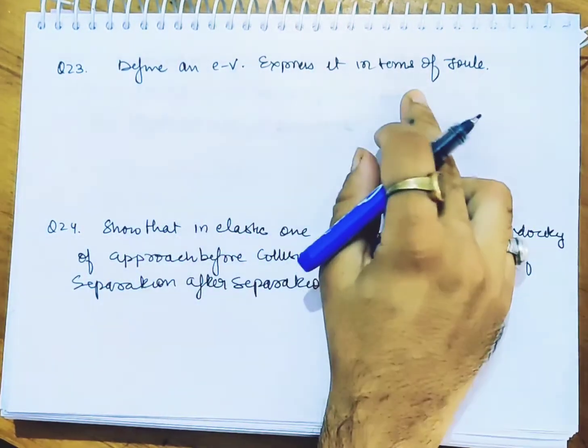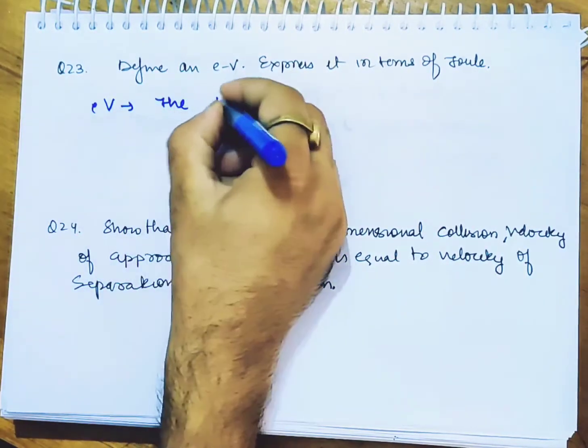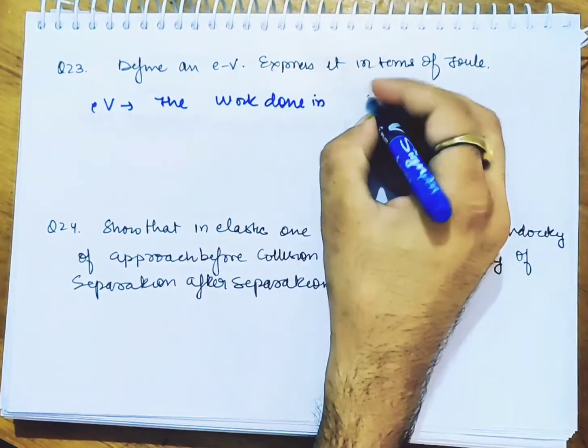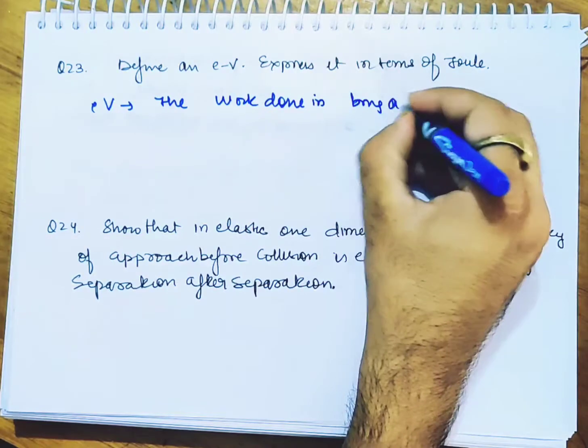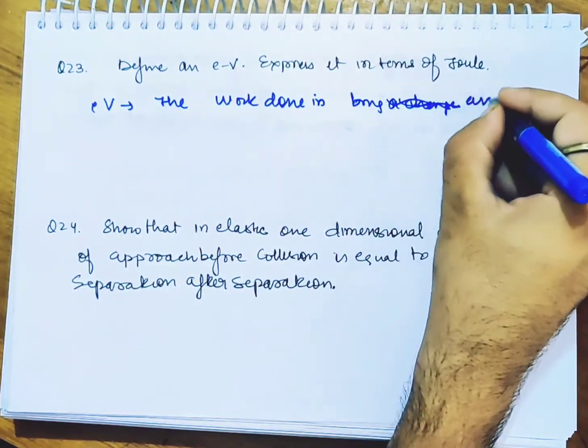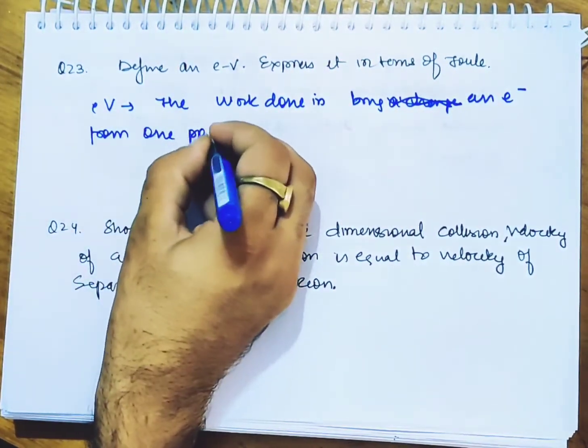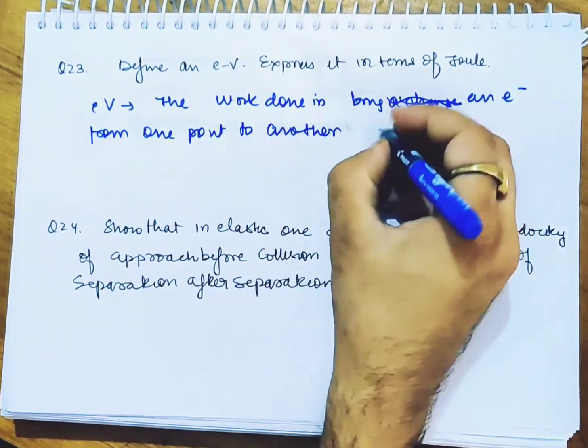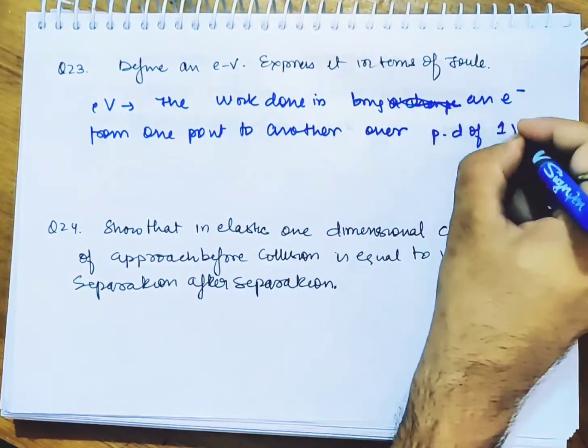Define electron volt and express it in terms of Joules. Electron volt is the work done in bringing an electron from one point to another over a potential difference of one volt.